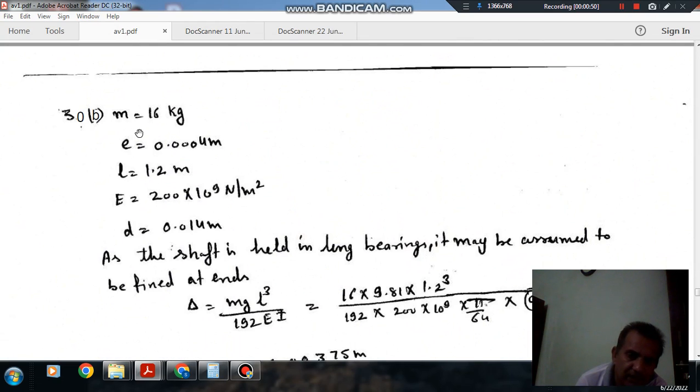So here, mass of the rotor is given as 16 kg. Eccentricity is given as 0.004 meter, or 0.4 mm, converting it into meters. Length is given as 1.2 meter. We are taking all things in meters. E is given as 200 x 10^9 N/m². Diameter is given as 0.014 meter, or 14 mm.